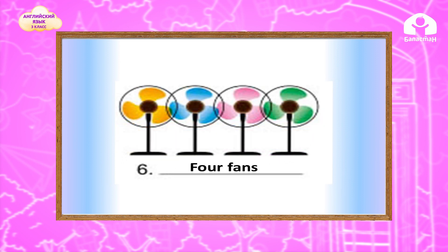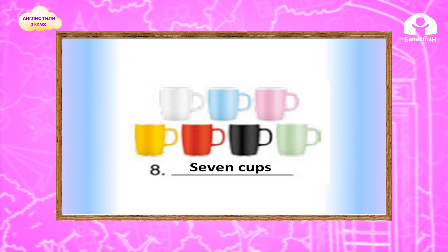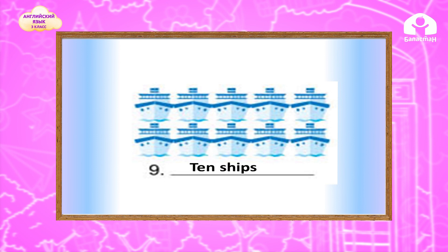How many pens are there? Let's count: one, two, three, four — four pens. You're right. How many pens are there? Let's count: one, two, three, four, five, six, seven, eight. How many cups are there? Let's count: one, two, three, four, five, six, seven — there are seven cups. Okay. Let's count our ships: one, two, three, four, five, six, seven, eight, nine, ten. You're right, there are ten ships.